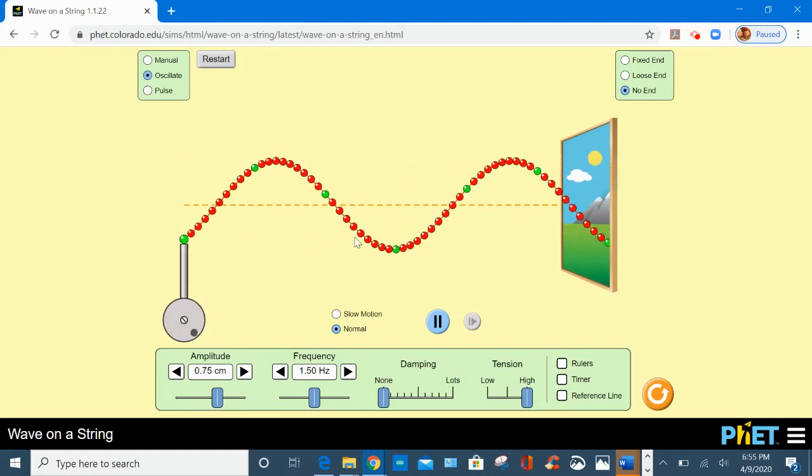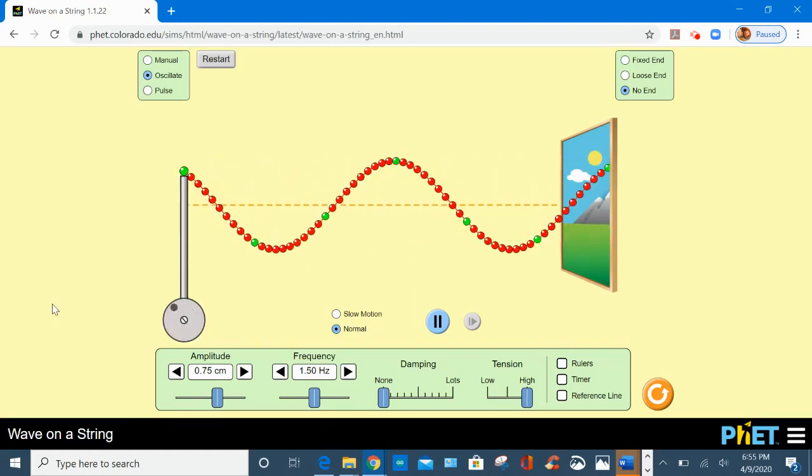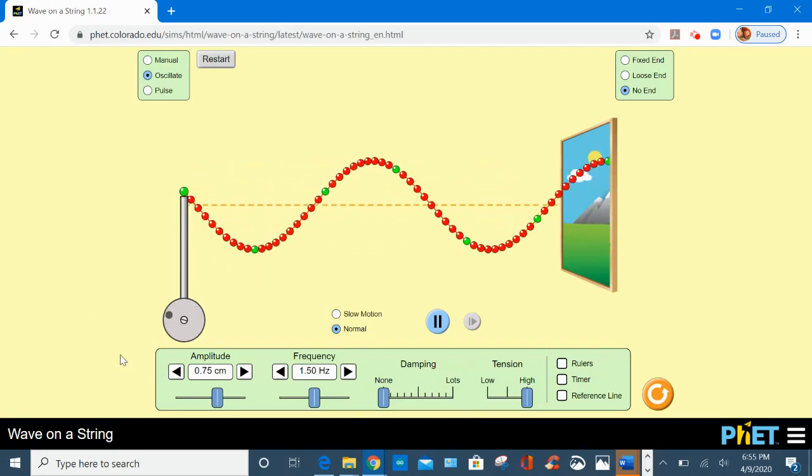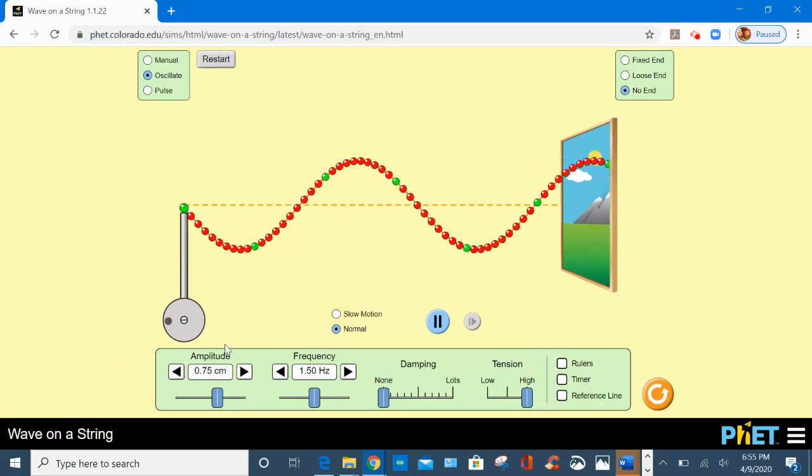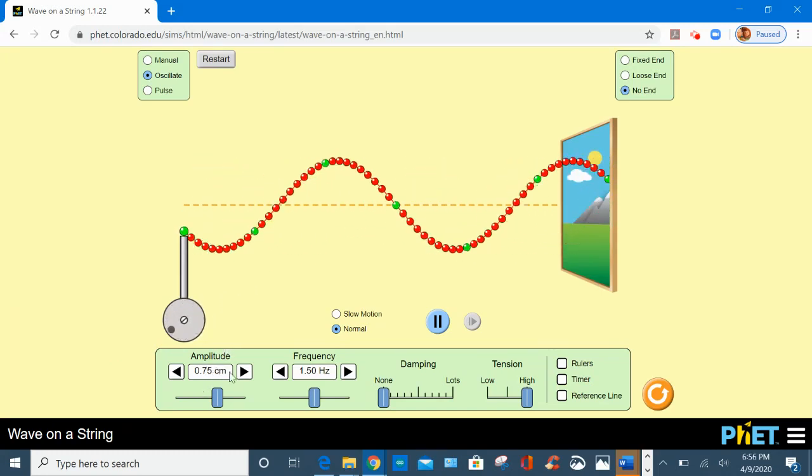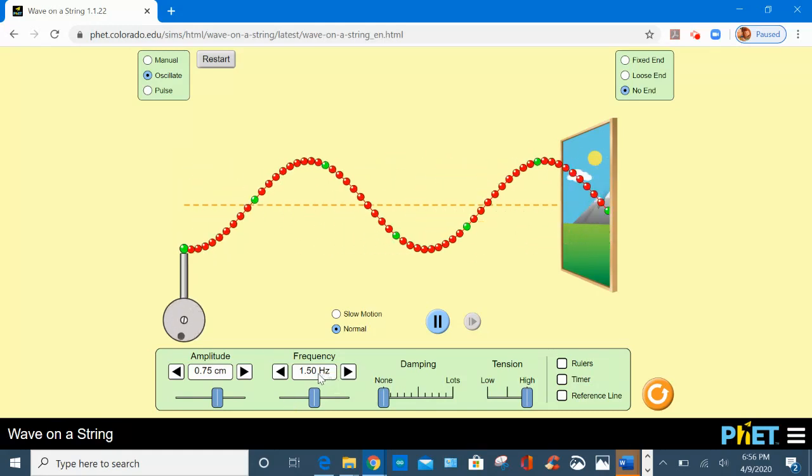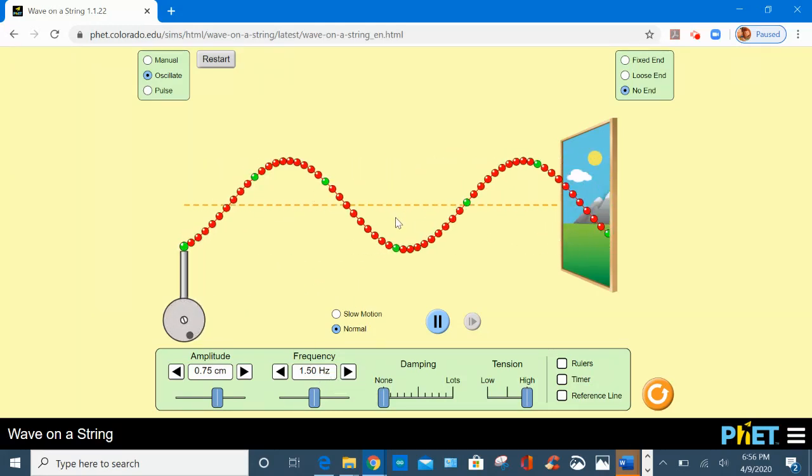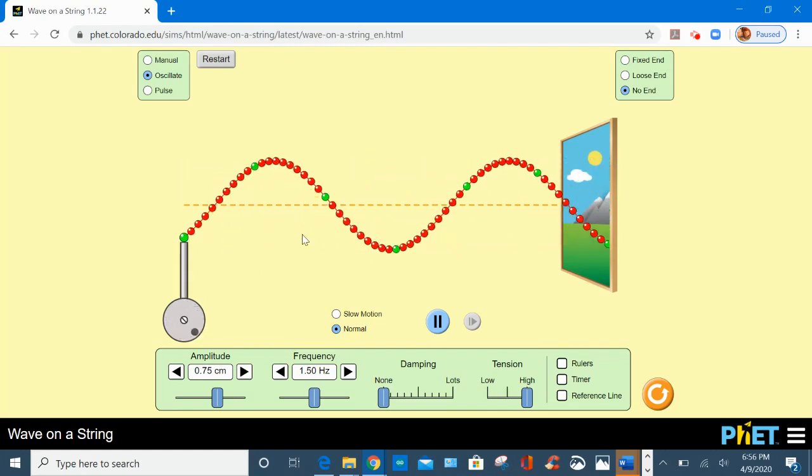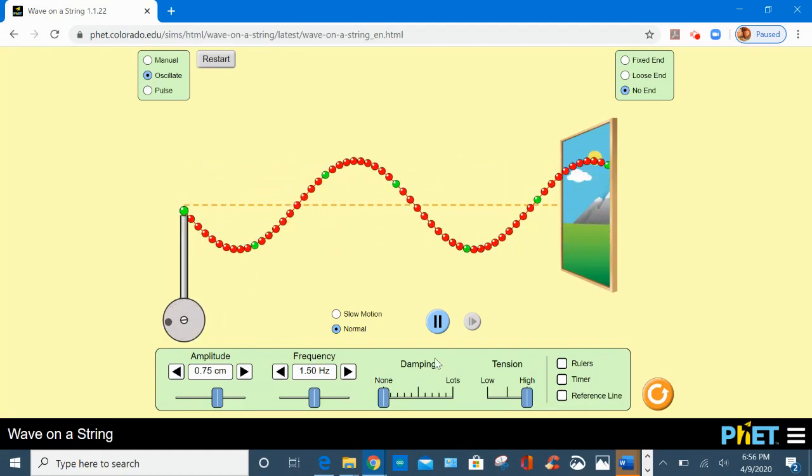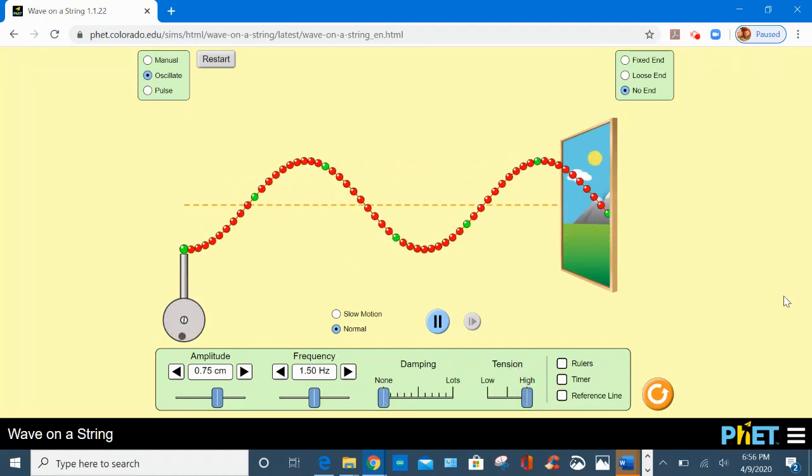And the practice that I want to do with you to apply those features is I want to verify the amplitude of this wave, number one, if it's 0.75. I want to verify the frequency of this wave, and I want to measure the wavelength of this wave, and I want to calculate the speed of this wave. So it's very simple. So keep damping zero and tension high for this practice.